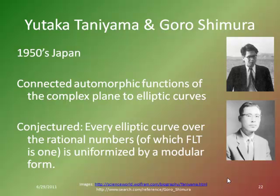He meets Goro Shimura as they're trying to put together a conference in Japan talking about the prominent and important math of the day. They conjectured that every elliptic curve over the rational numbers — and we've identified Fermat's Last Theorem as an elliptic curve — could be uniformized by a modular form. We saw modular forms as well when we looked at Poincaré.